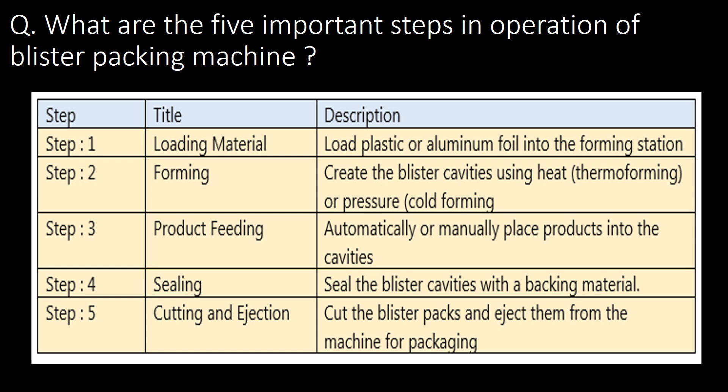Step 4 is sealing — here we seal the blister cavities with a backing material. Step 5 is cutting and ejection — here we cut the blister packs and eject them from the machine for packaging.